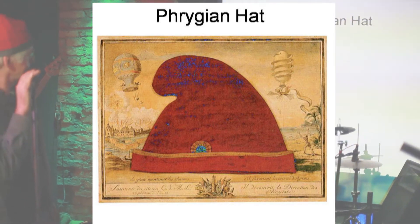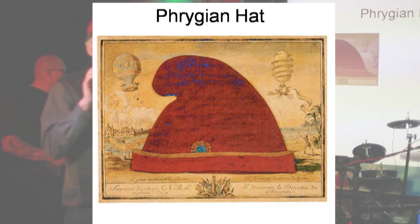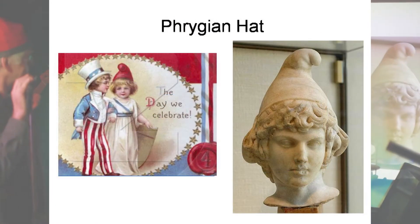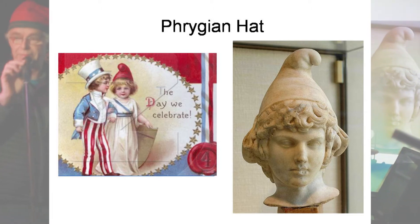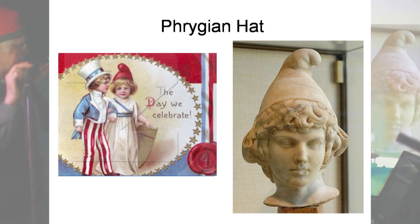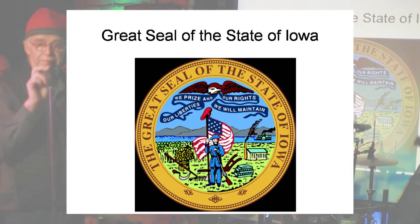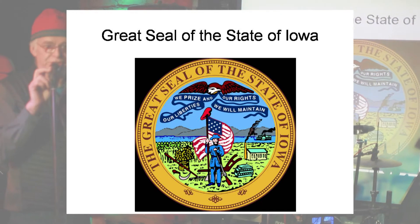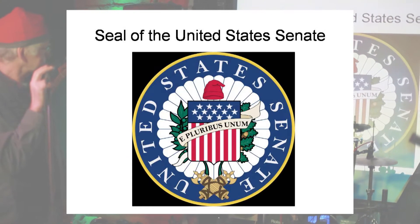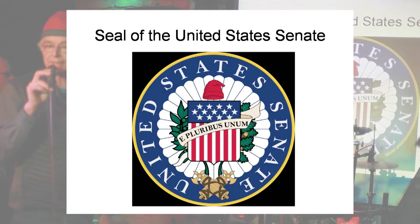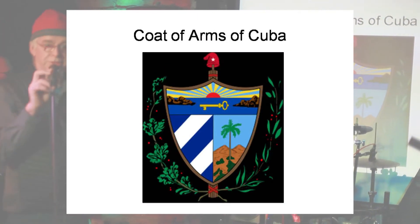Here you see a French hat worn during the French Revolution. Here you see some Americana — young Uncle Sam with his girlfriend, wearing a Phrygian cap. A sculpture from Rome. Here is the official seal of the state of Iowa — you may see the Phrygian cap in that logo on top of the American flag. Here is the official seal of the United States Senate with the Phrygian cap. Here is the official seal of Cuba.